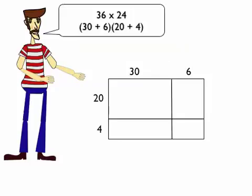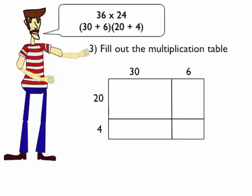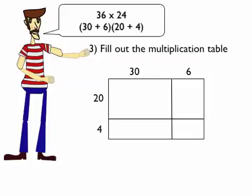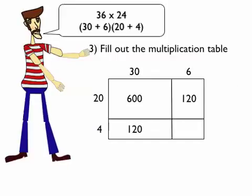Fill out the multiplication table. Yes, this is a multiplication table. I know how to do this. Thirty times twenty is six hundred, and six times twenty is one hundred and twenty. Thirty times four is also one hundred and twenty. Six times four, twenty-four. Yes, my multiplication table is filled out.